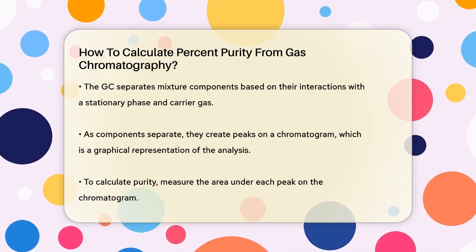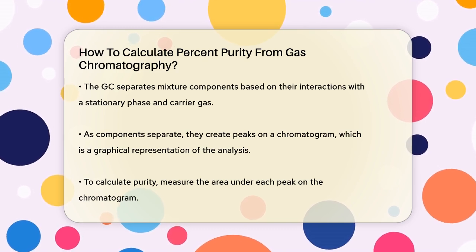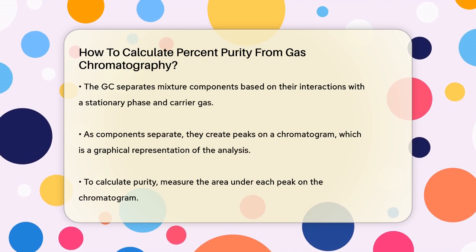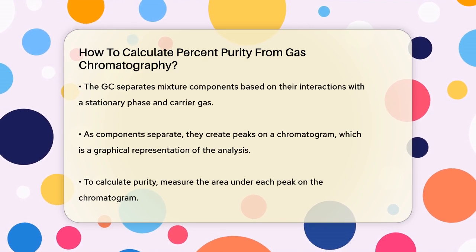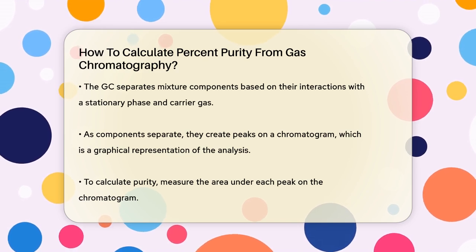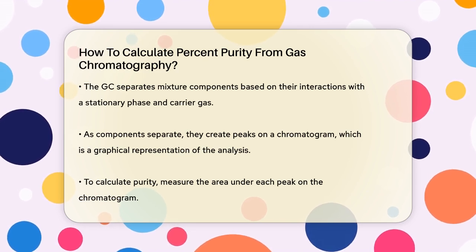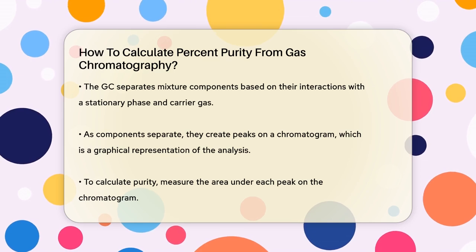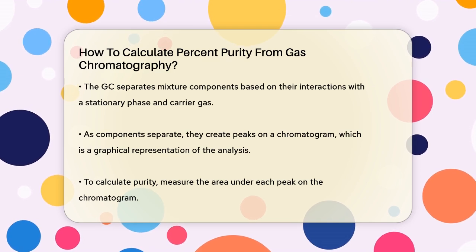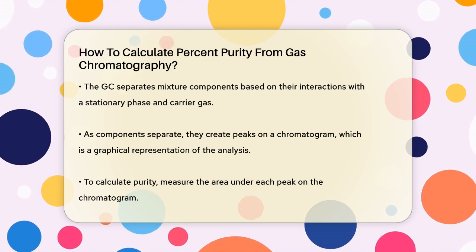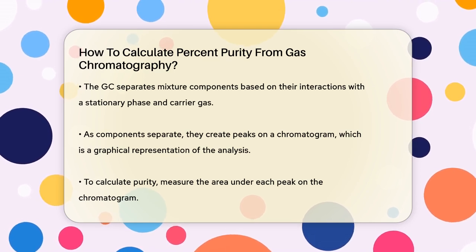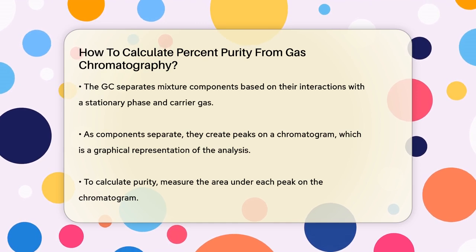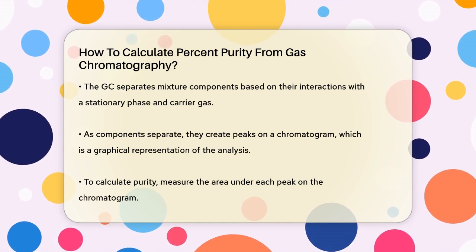Now let's talk about the chromatogram. This is the graph that shows the peaks corresponding to each component in your mixture. To calculate the purity, you need to measure the area under each peak. One simple way to do this is by using the triangulation method, where you multiply the height of the peak by its width at half the height.